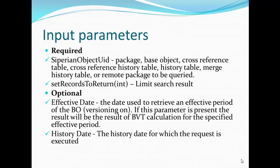What are the required input parameters? There are two required parameters: first is Sirius Object UID and second is records_to_return. Total record and records_to_return are two different things — total record counts the records while records_to_return limits how many records the end user wants to see. For Sirius Object UID, we can send a package, base object, cross reference, cross reference history table, history table, merge table, or remote package.